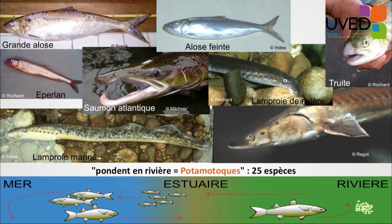This is what blueback herrings, twaite shad, Atlantic salmon, sea trout, and in France species like lamprey, smelts, and larger fishes such as sturgeons do. These species are called potamodrome, which means that they reproduce in the river, and there are 25 such species in Europe.